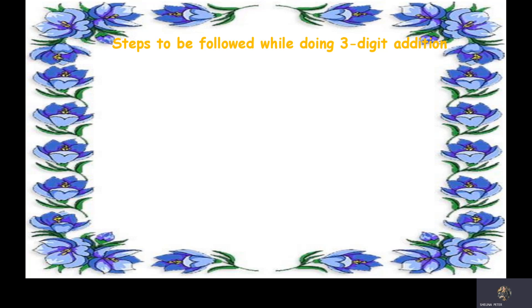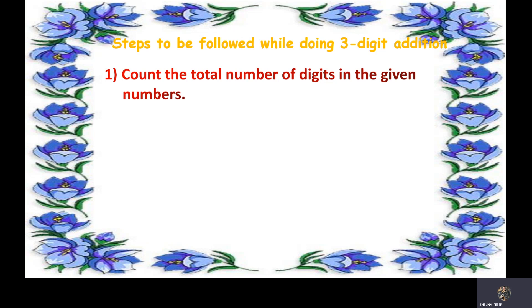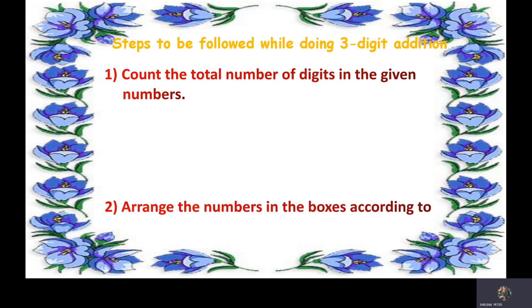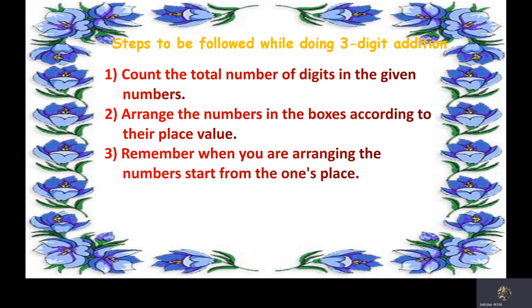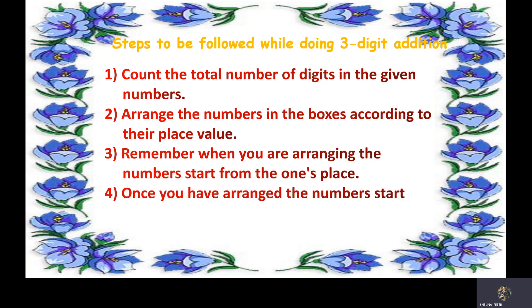Here are the steps to be followed while doing three-digit addition. The first step is to count the total number of digits in the given numbers. The second step is to arrange the numbers in the boxes according to their place value, starting from the ones place. The last step is, once you have arranged the numbers, start adding the numbers from the ones place.